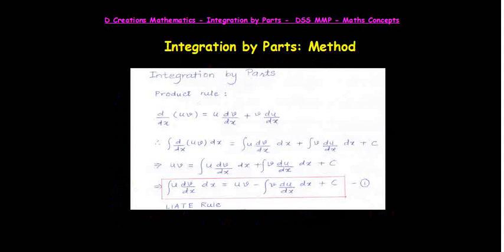If I rearrange the terms and take some terms from the right side to the left, I will get integral of u*dv/dx dx equals uv minus integral of v*du/dx dx + c. Please understand here c is an arbitrary constant, so we are not worried about changing its sign.